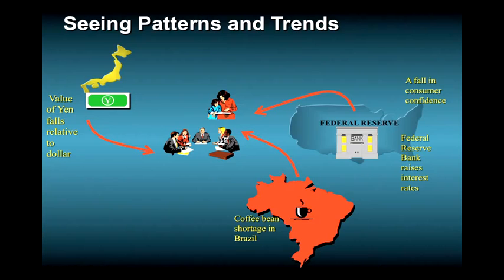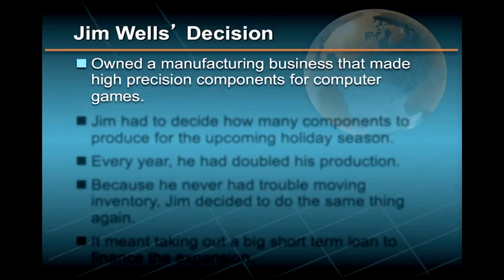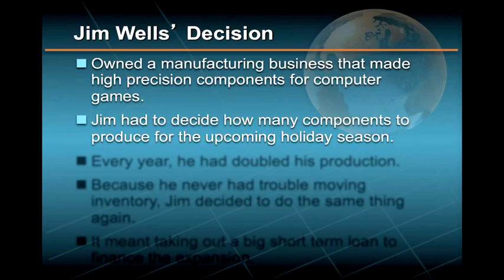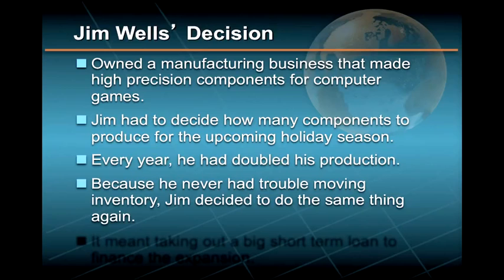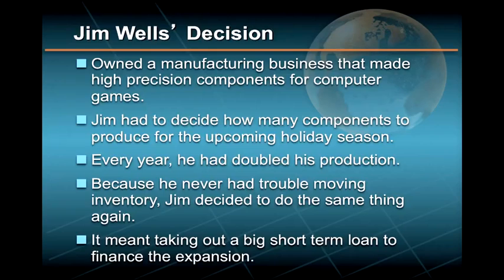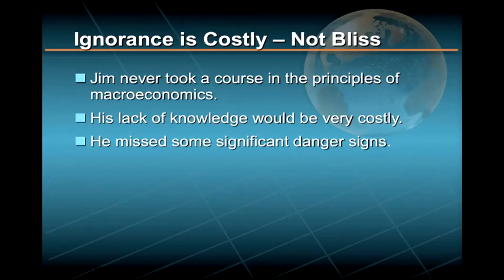Let me show you what I mean with a couple of stories about two fictional people in very real situations. Jim Wells used to own a small, high-tech manufacturing business that made precision components for computer games. Every July, Jim had to decide how many components to produce for the upcoming holiday season, and every year he had simply doubled his production. Since he never had any trouble moving the inventory, Jim decided to do the same thing again, even though it meant taking out a big short-term loan to finance the expansion. Unfortunately, Jim's college studies in engineering never included a course in macroeconomics, so in making his decision, he missed some rather significant danger signs.